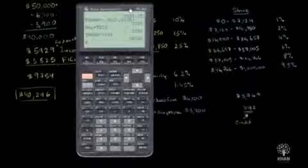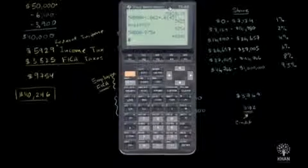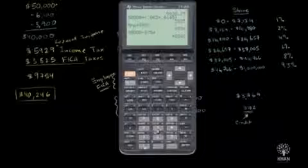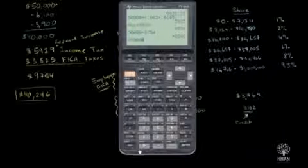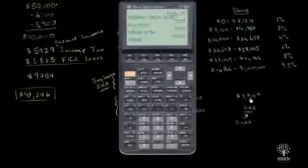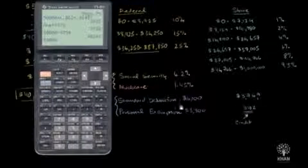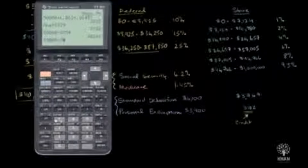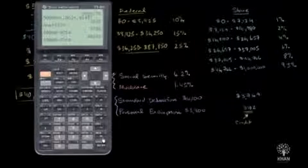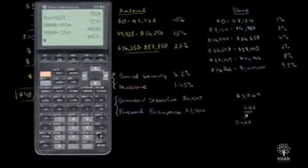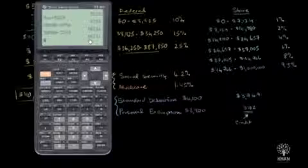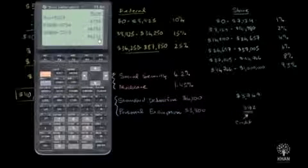So first, let's think about what our taxable income is in my state. I'm starting with $50,000 gross income. Then I have a standard deduction in my state of $3,769, which gets me to taxable income of $46,231.